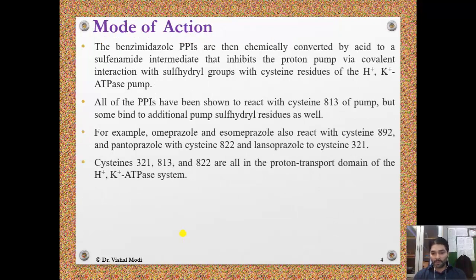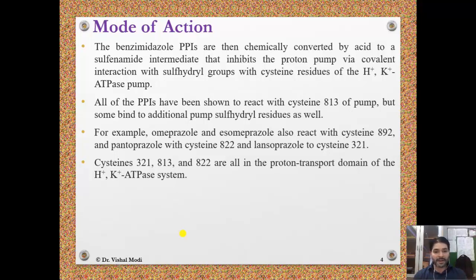Mode of action: the benzimidazole proton pump inhibitors are chemically converted by acid to a sulfenamide intermediate that inhibits the proton pump via covalent interaction of a sulfahydryl group with cysteine residue of the H+/K+ ATPase pump. All of the PPIs have been shown to react with cysteine-813 of the pump, but some bind to additional pump sulfahydryl residues as well. Most proton pump inhibitors bind to the cysteine sulfahydryl group at position 813.